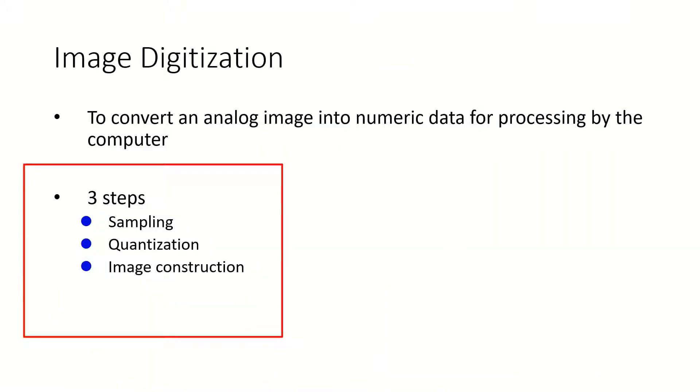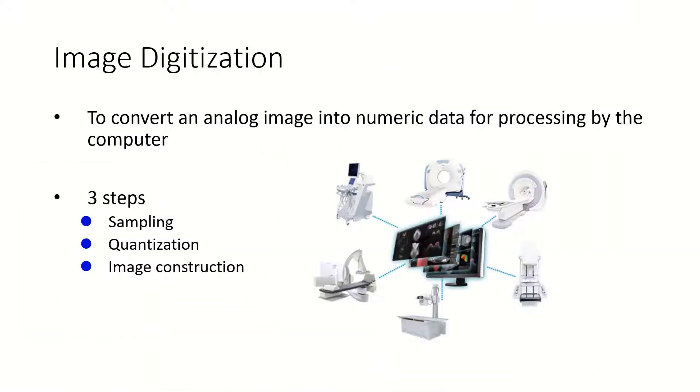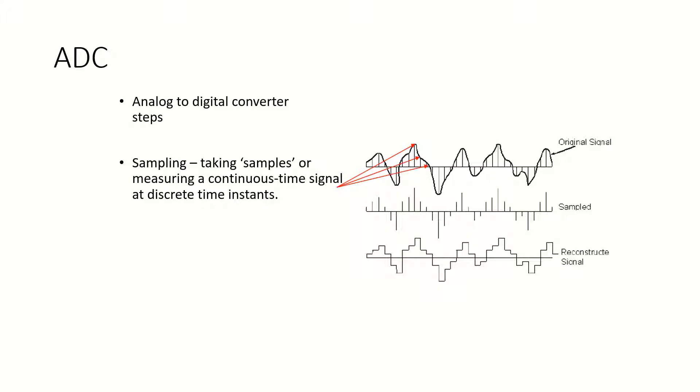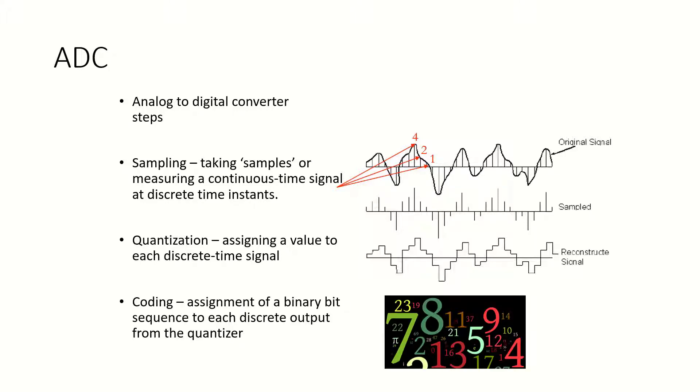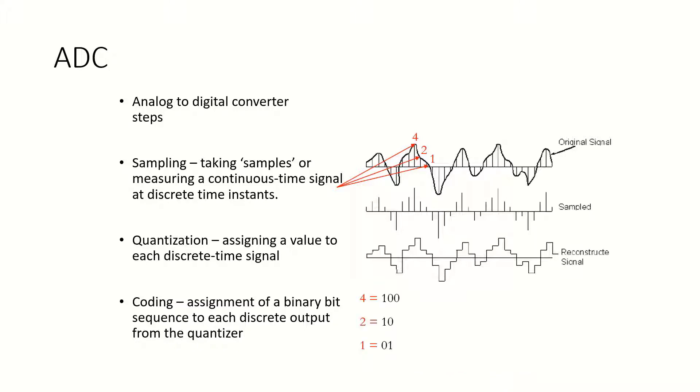Image digitization is the process of converting an analog signal or analog image into numerical data for processing by the computer. To create this data, we analyze the analog or continuous data. We then sample the data and then use that sample to quantify the data into numbers. These digitized numbers are used to create the image through coding. Coding is the assignment of a binary digit sequence to each discrete output from the quantitizer.